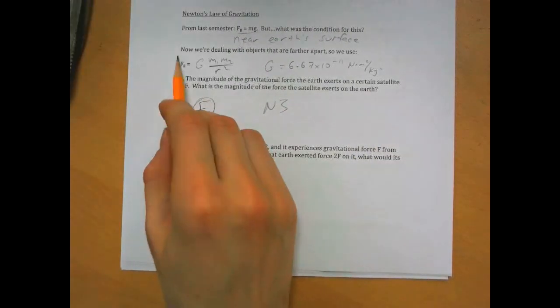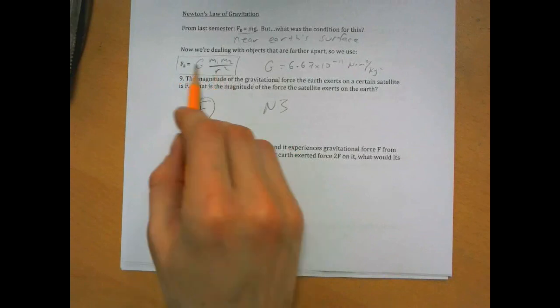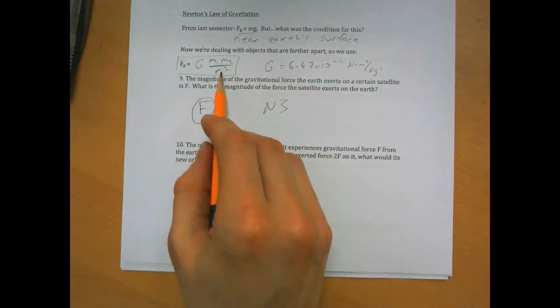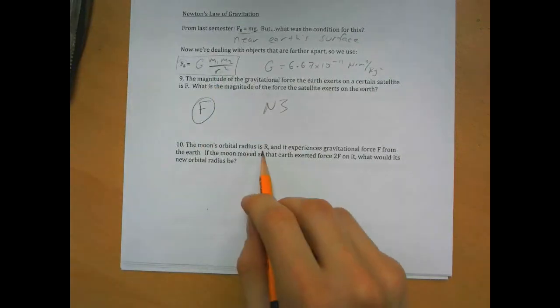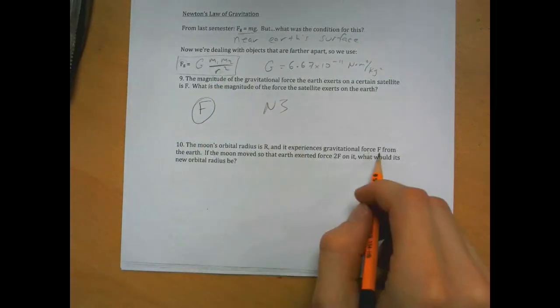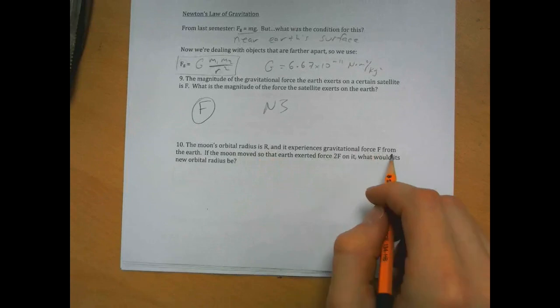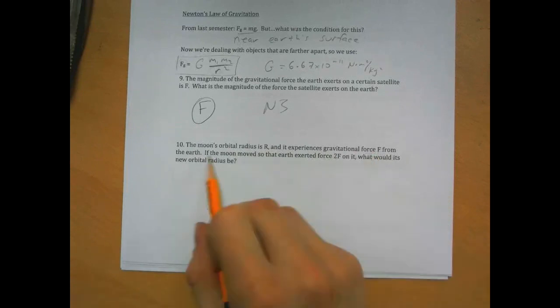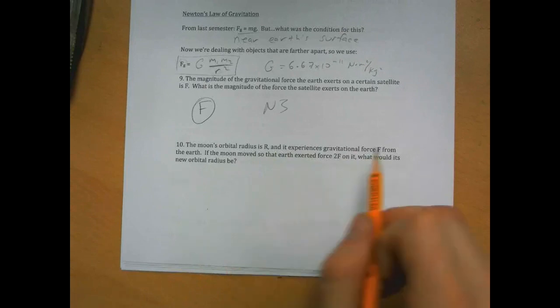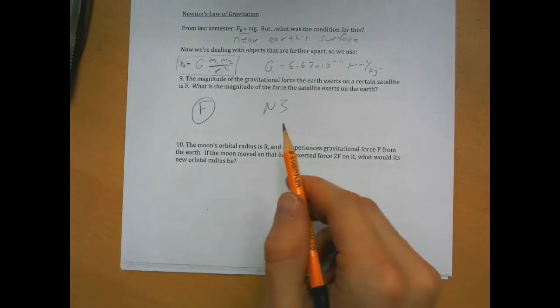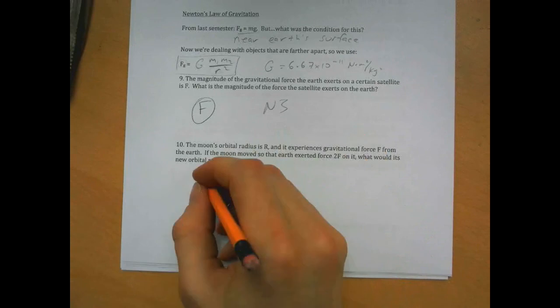This equation demonstrates that the gravitational force is proportional to 1 over r squared, inverse square. The moon experiences gravitational force F from the Earth. If the moon exerted force 2F on it, what would its new orbital radius be? So we're changing F, we want to see what happens to r, so when we do that, we want to rearrange this to solve for r.